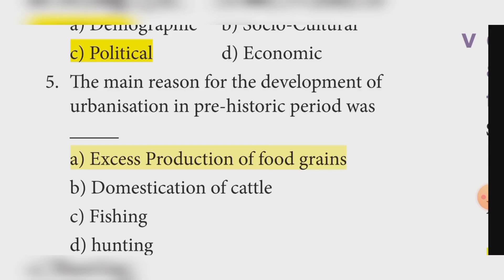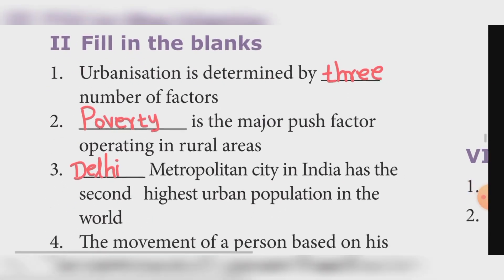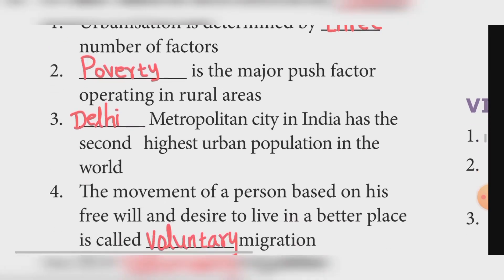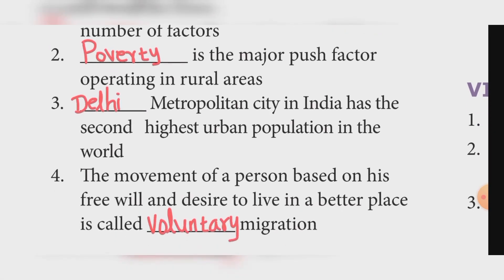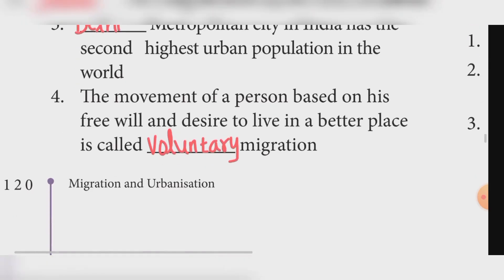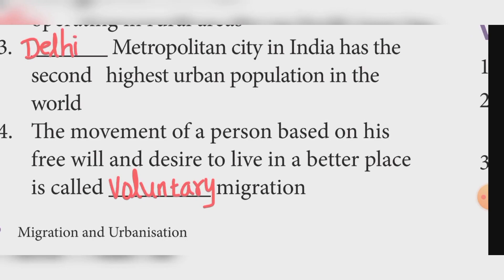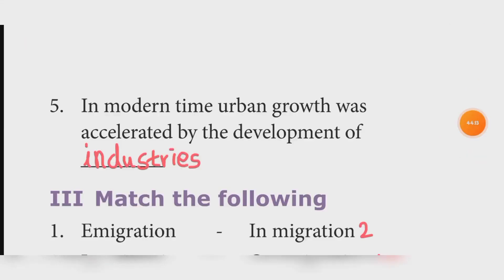Fill in the blanks. Urbanization is determined by three number of factors. The major push factor operating in rural areas is Poverty. The metropolitan city in India with the second highest urban population in the world is Delhi. The movement of a person based on his free will and desire to live in a better place is called Voluntary migration. In modern times, urban growth was accelerated by the development of industries.